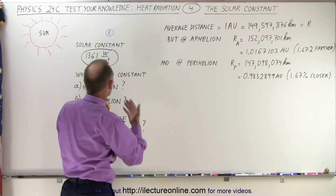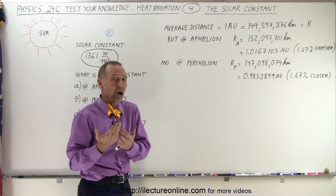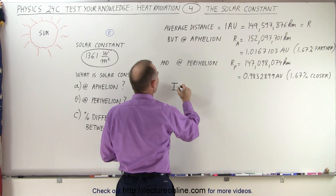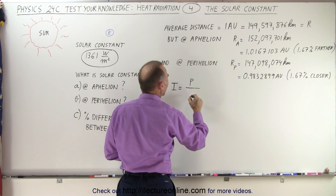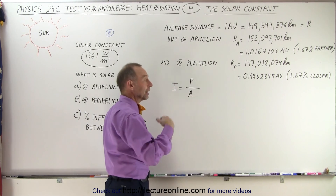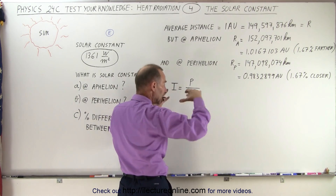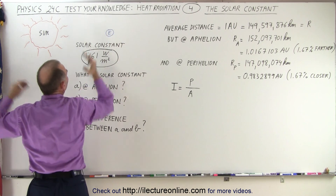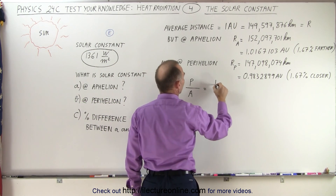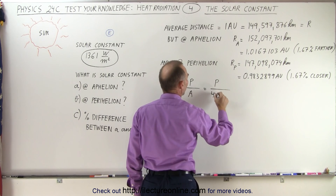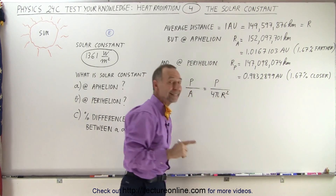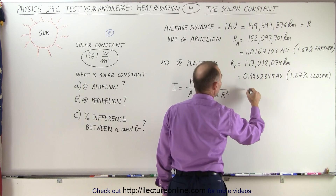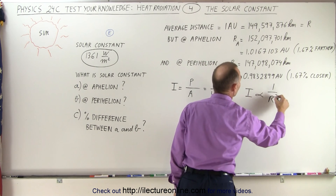What does that mean in terms of the solar constant — how much more or less energy are we receiving per square meter? We have to remember that the intensity received equals the power of the source divided by the area over which it spreads. That area is the surface area of a sphere, so intensity equals power divided by 4πr². This means intensity is inversely proportional to the square of the distance.